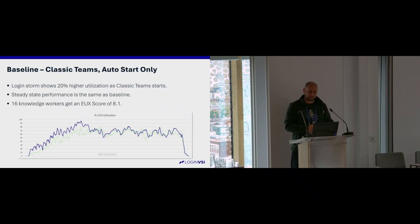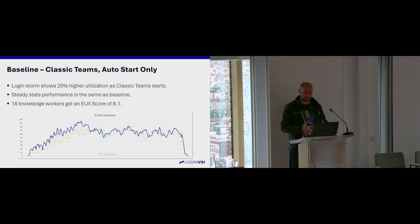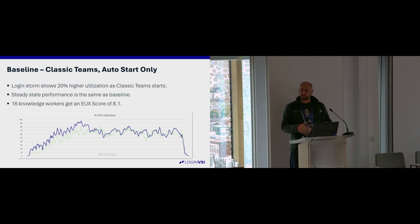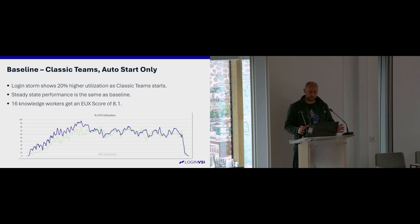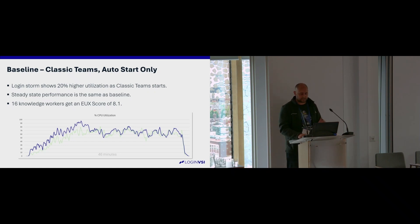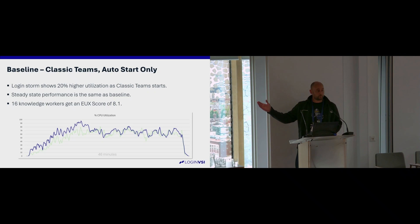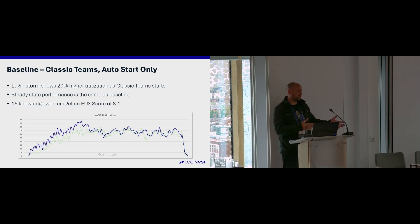When we put Teams in with auto-start only — not doing anything with Teams, it's just running — we had to reduce density because we couldn't fit the same number of users on the VM anymore. We're now down to 16 users for that same VM. We get a better EUX score because there are fewer users, usually related to disk performance. But you can see CPU is a little bit higher at the beginning of the workload.